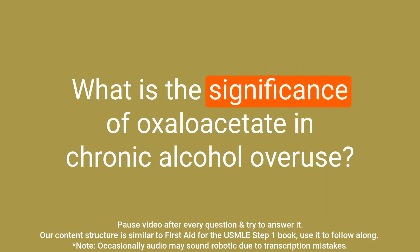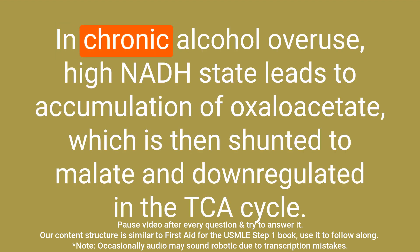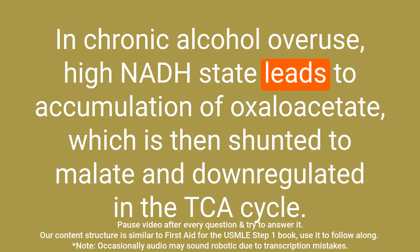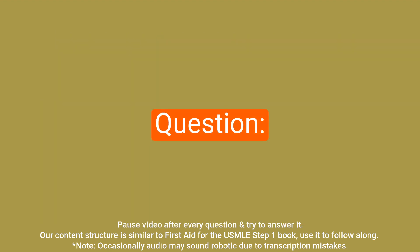Question: What is the significance of oxaloacetate in chronic alcohol overuse? Answer: In chronic alcohol overuse, a high NADH state leads to accumulation of oxaloacetate, which is then shunted to malate and down-regulated in the TCA cycle.